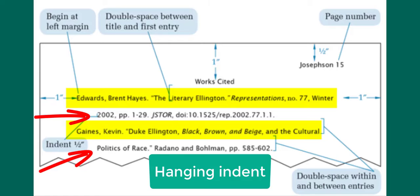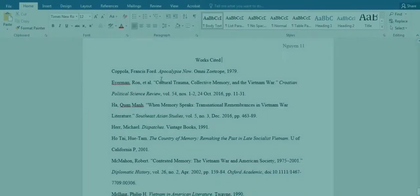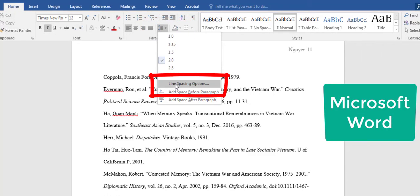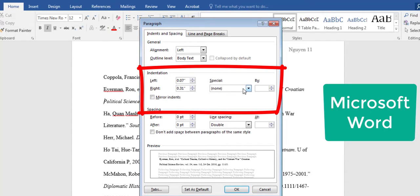Word processing programs usually don't allow for the additional lines to be indented using the tab key, so you will need to select the hanging indent option. In Microsoft Word, select the lines that you want to indent, then go to line and paragraph spacing. Go to line spacing options, then under indentation, special, select hanging.